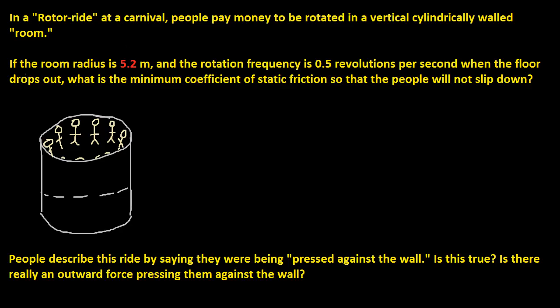So the question is, if the room radius is 5.2 meters and the rotational frequency is 0.5 revolutions per second when the floor drops out, what is the minimum coefficient of static friction so that the people will not slip down?